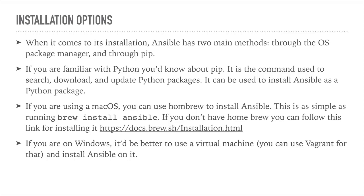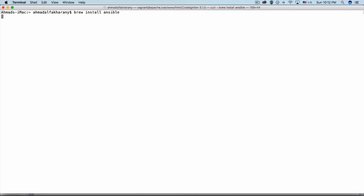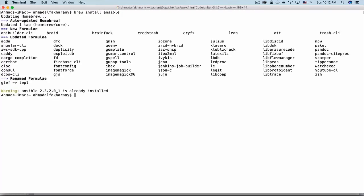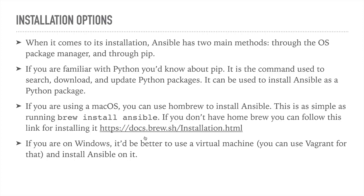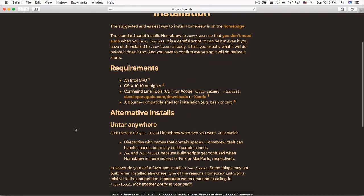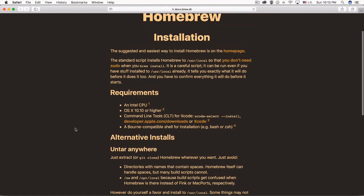If you are using macOS, you can use Homebrew to install Ansible, and this is as simple as running 'brew install ansible'. If you are on a Mac, just issue that command on the command line. I have Ansible already installed on my macOS machine, so it's just going to upgrade Homebrew and inform me that Ansible is already installed. If you don't have Homebrew installed, it is a tool people download on their Mac to install programs typically used with Linux. Just go to the URL docs.brew.sh/installation and follow the instructions.